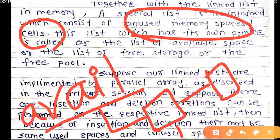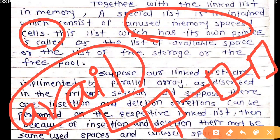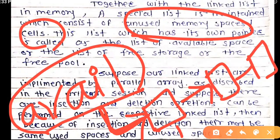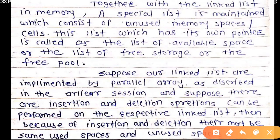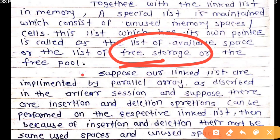This continues just as with the earlier linked list — the address of the previously freed linked list nodes is found and the list continues. This structure is also called the free storage list or free pool.